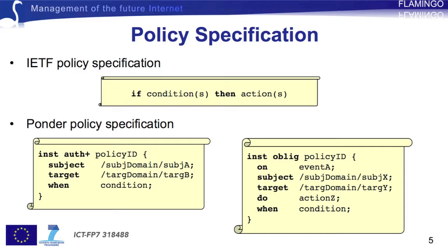It supports two main policy types: authorization and obligation policies. Authorization policies define what actions a subject can perform on target objects. A positive authorization policy is used to define the actions that subjects are permitted to perform on target objects,